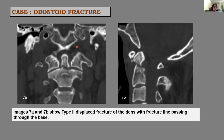This is a case of trauma. Images 7A and 7B show a type 2 displaced fracture of the dens with a fracture line passing through the base. In our study, this type 2 fracture was the most common type.